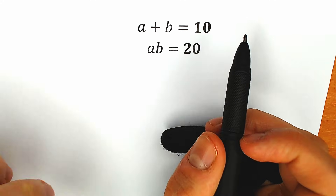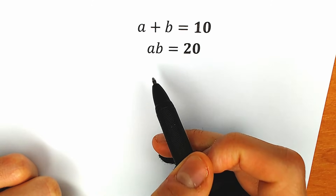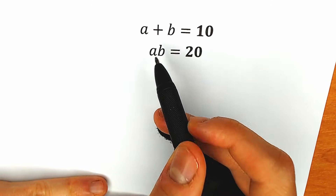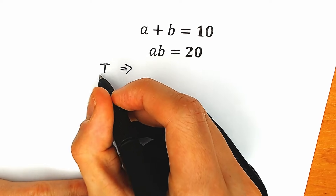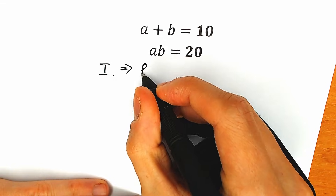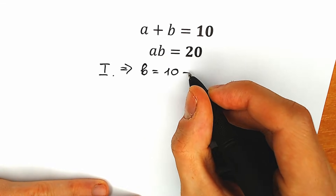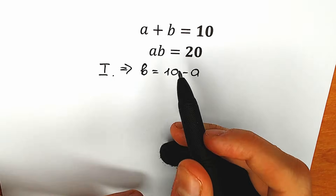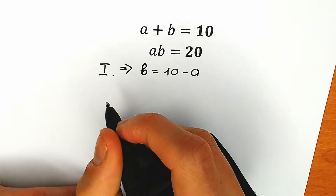So first of all, how do we solve this type of question? Because we have two equations — first one and the second one. From the first equation, we're going to express b. So b is equal to 10 minus a. And right now let's plug in this — instead of b, let's plug in 10 minus a into the second equation.